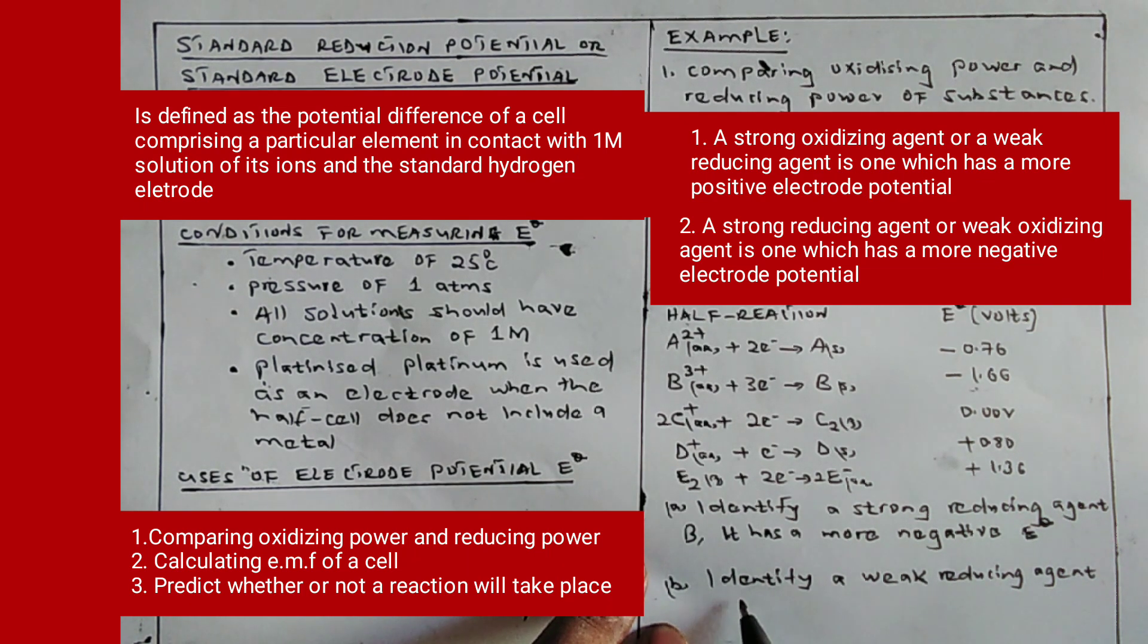Part B: identify a weak reducing agent. A weak reducing agent is also called a strong oxidizing agent, and that is one which has a more positive electrode potential.